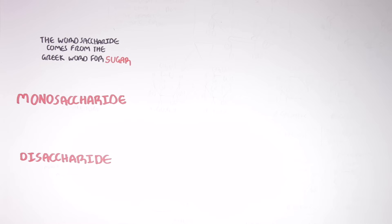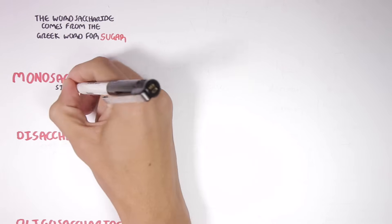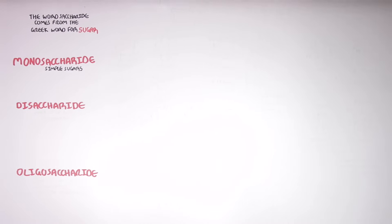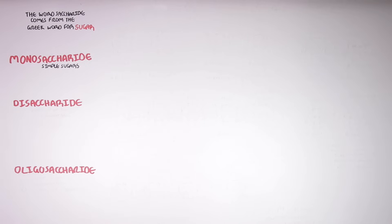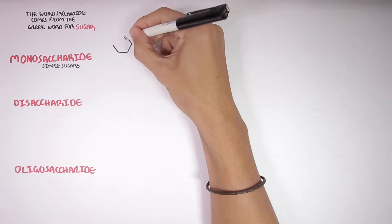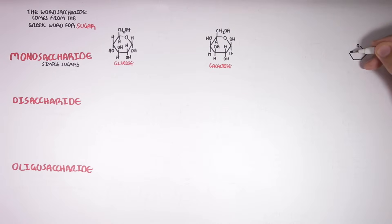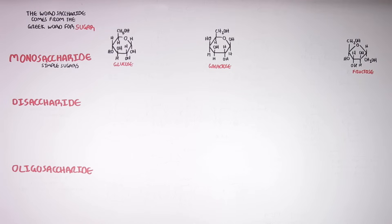Let's begin with monosaccharides. Monosaccharides are also referred to as simple sugars, and they are the smallest units that make up any carbohydrate — they are the building blocks. The three main monosaccharides in the human diet include glucose, galactose, and fructose. These structures contain carbons, hydrogens, and oxygens.